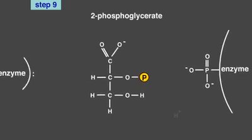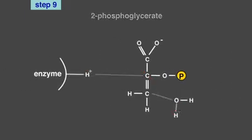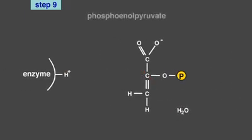In the ninth step, the enzyme enolase removes a water molecule from 2-phosphoglycerate, creating phosphoenolpyruvate. The loss of water redistributes energy within the molecule, creating a phosphate group with an extremely high free energy of hydrolysis.